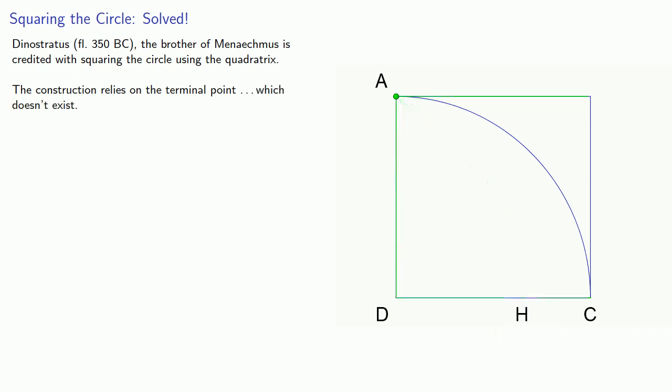Remember the quadratrix is formed by the intersection of the falling line and the turning radius. And at the bottom, the line and the radius coincide. There's no intersection point.